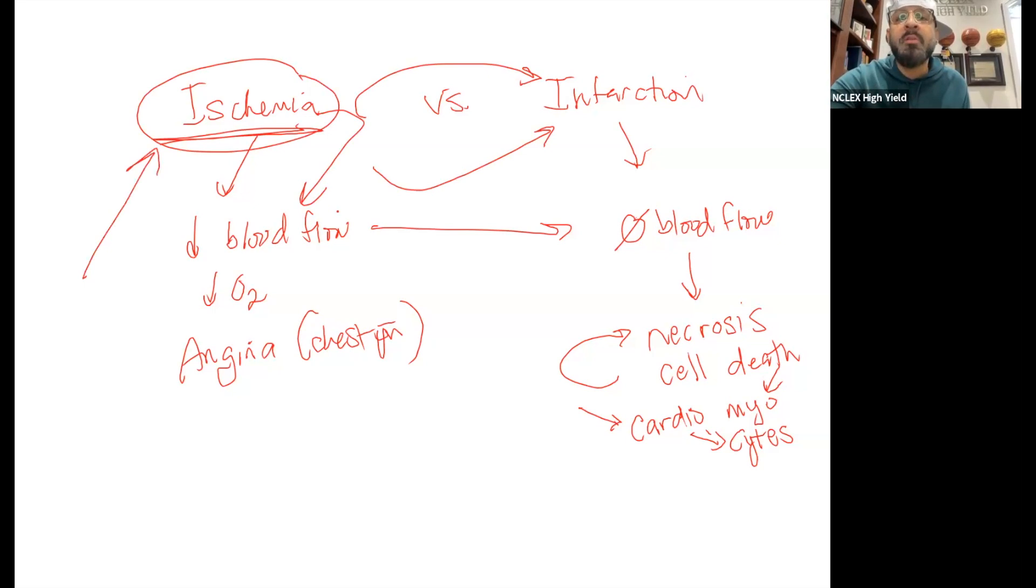So what we want to do here with angina, we want to take care of that blood flow - a lot of different things we can do. Medication is one of them. Invasive procedures like stents is another one. With infarct, we're watching out for these cardiomyocytes dying off because there is no blood flow.